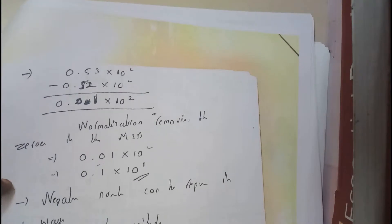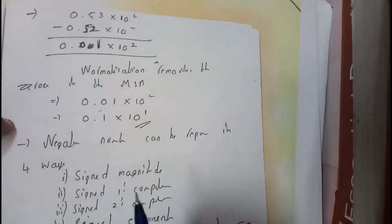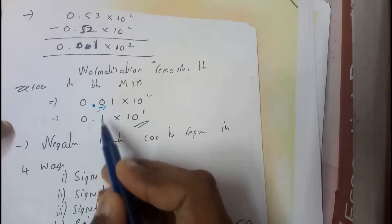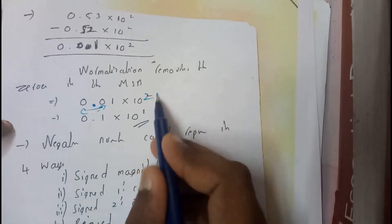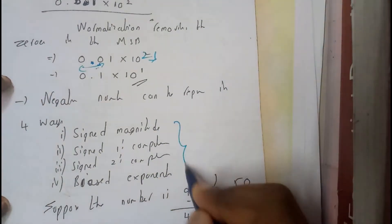Now you'll be using the normalization method. Normalization method is nothing but you will be removing the zeros on the right side of the point, pushing them that side by decreasing the power here. This can be done in four different ways.